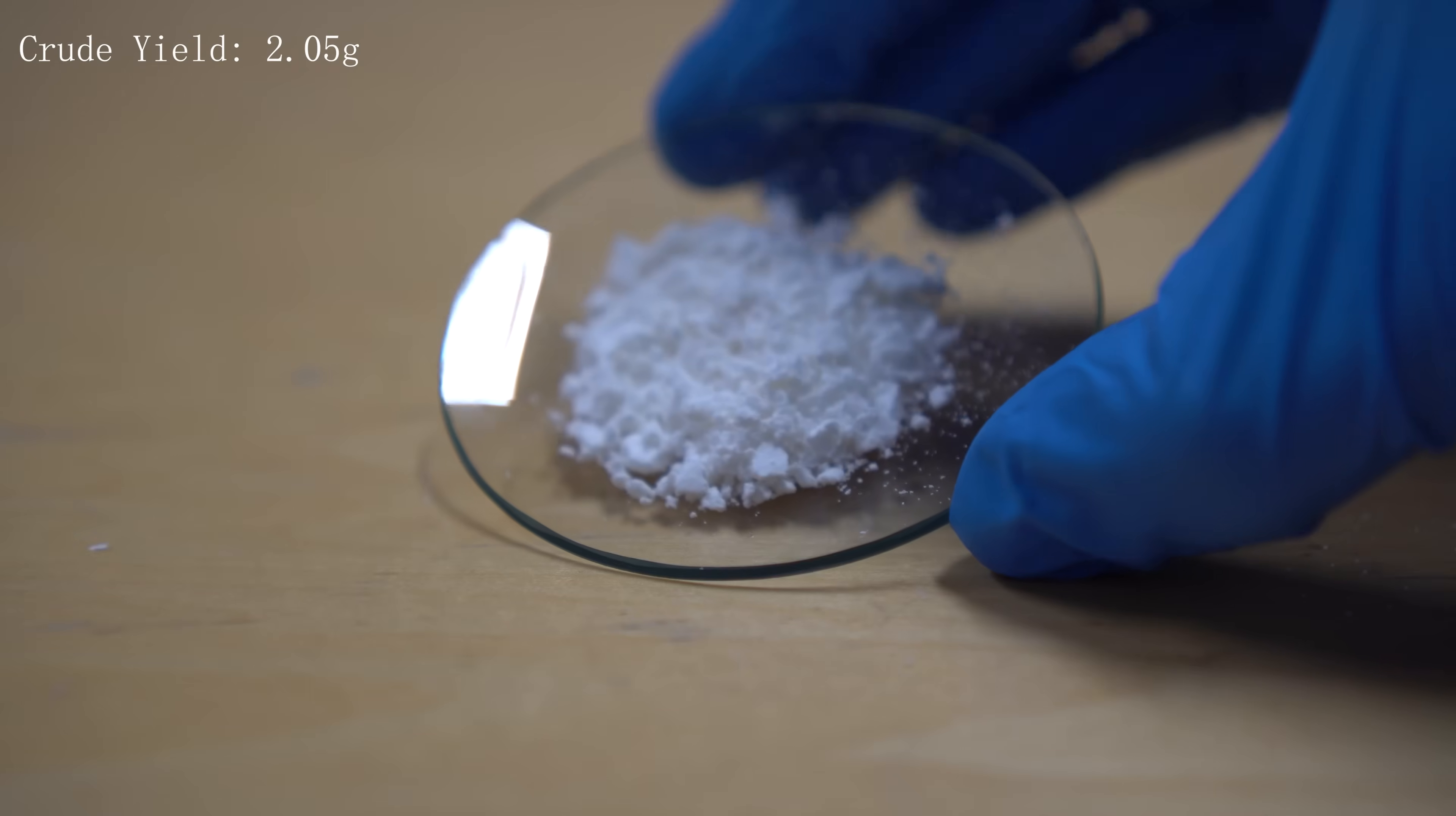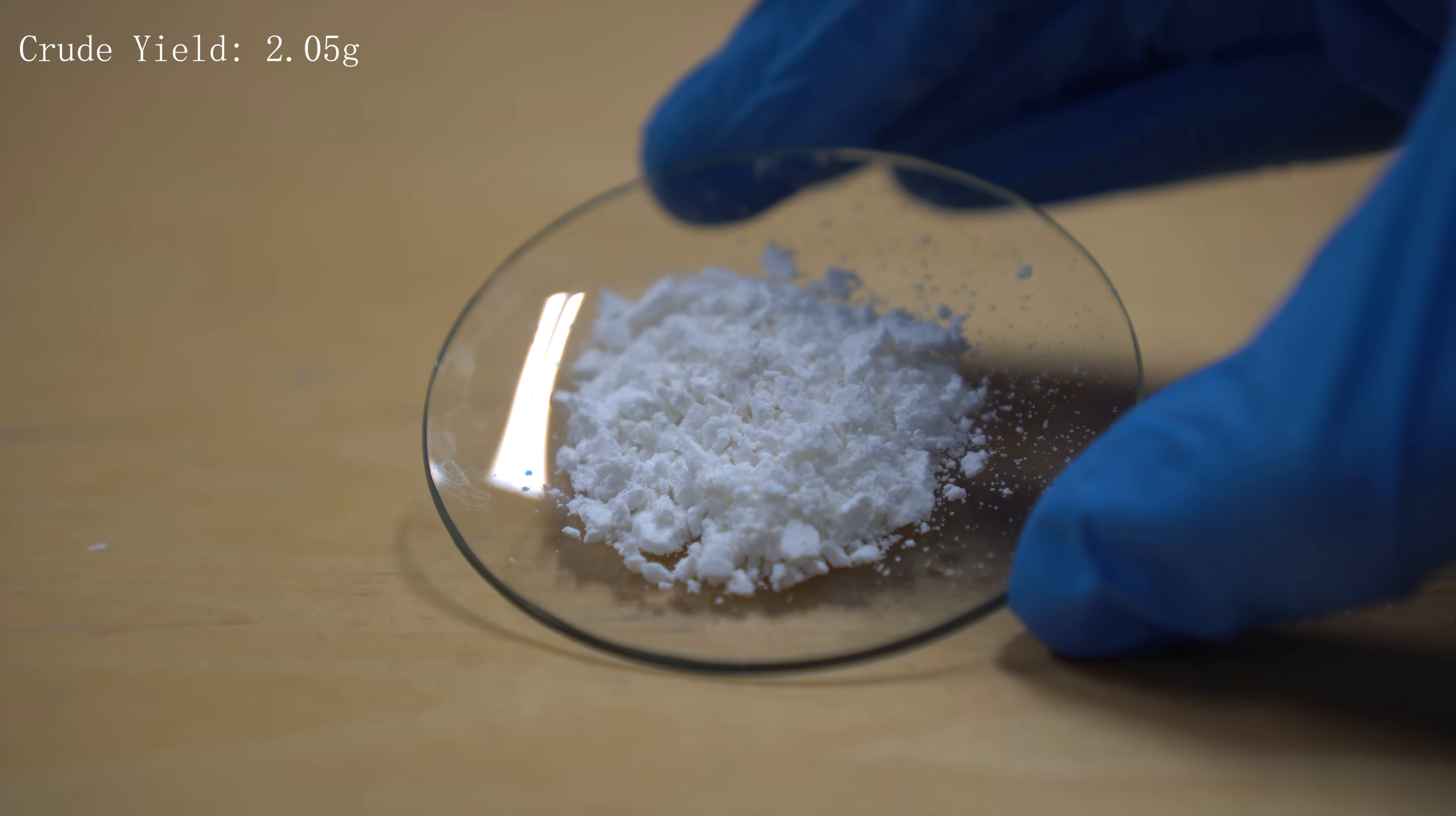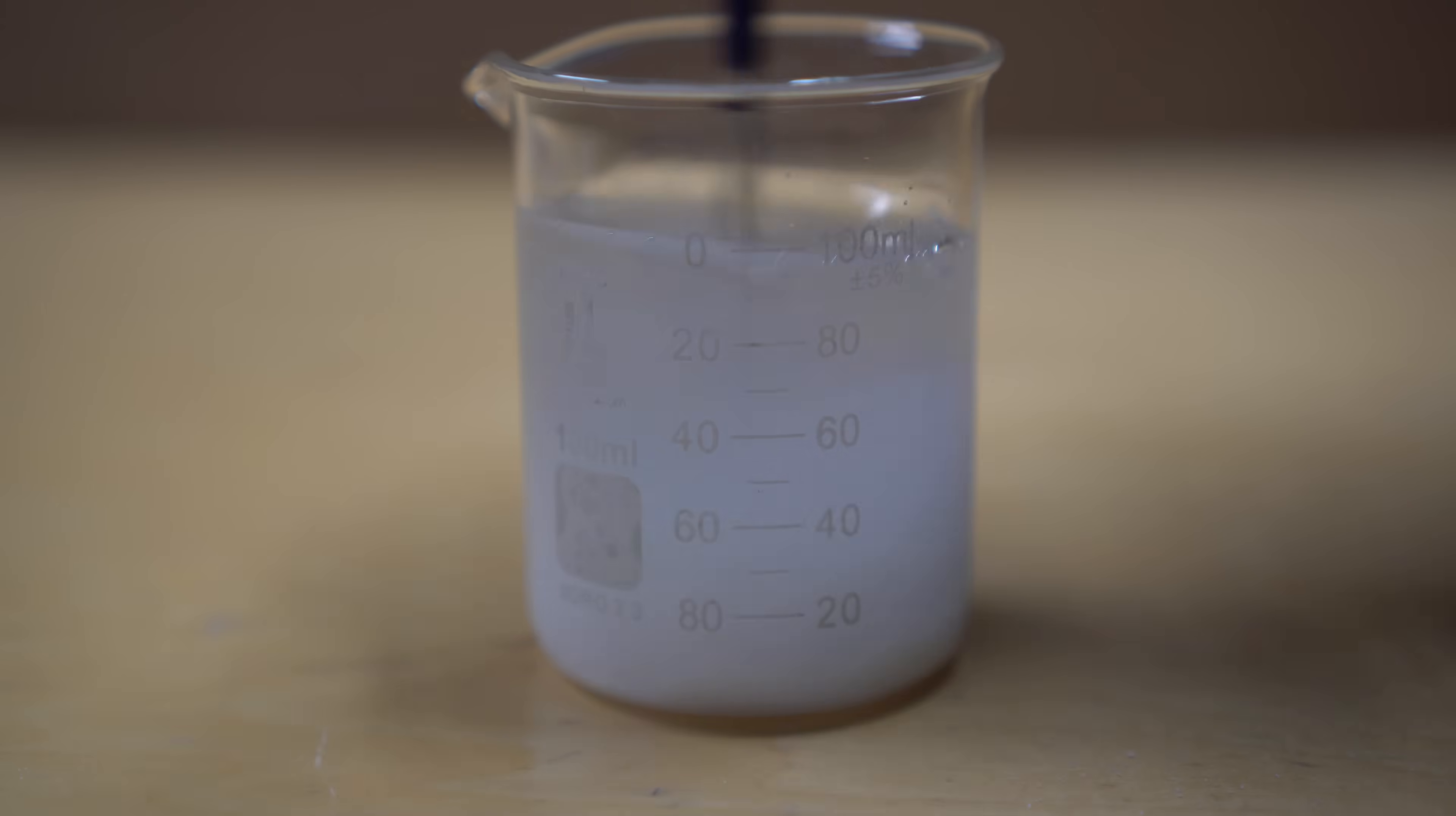I got a crude weight of around 2.05 grams. Now this isn't pure in any way and also had a lot of water weight as well. To clean up the crude aspirin, I made a saturated solution of sodium bicarbonate to neutralize any leftover acid that might be in the product and to make the aspirin more soluble in water.